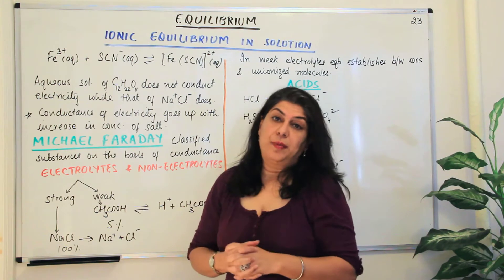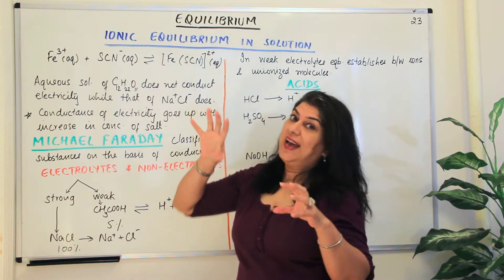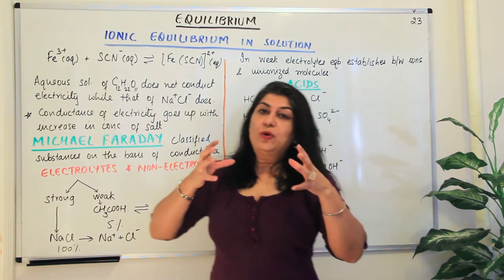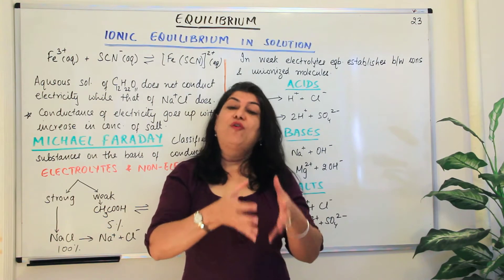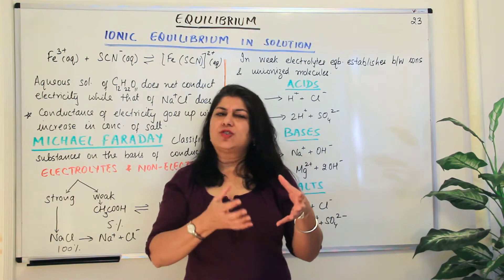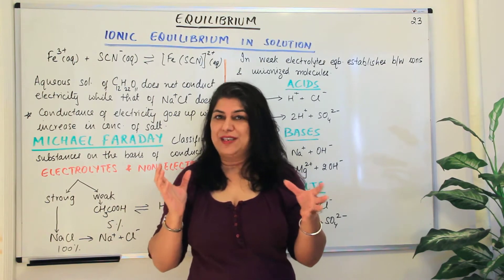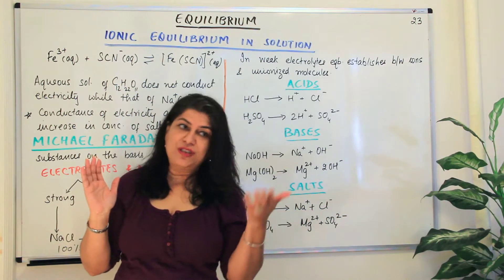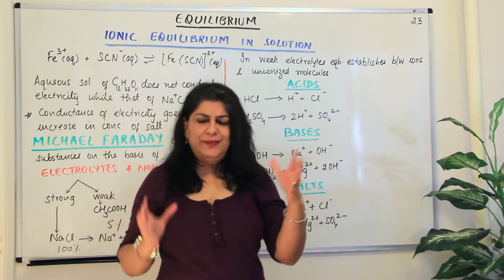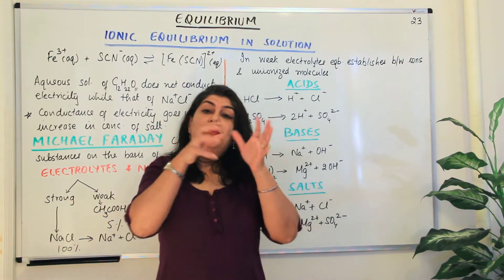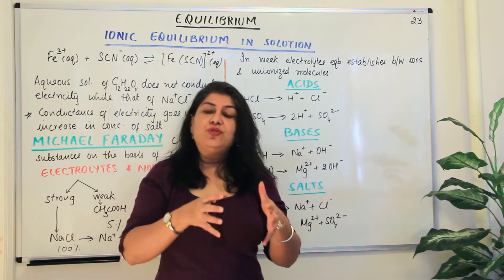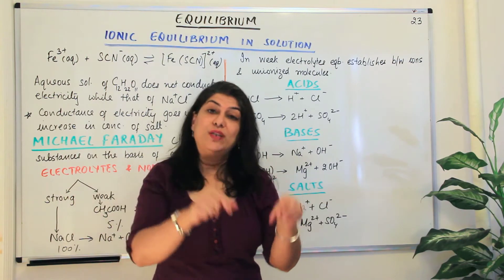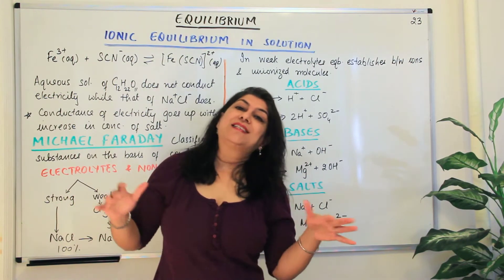When you have ionic compounds, they have, as I told you, positive and negatively charged ions. When you put an ionic compound in water, they form a solution. Water is a polar solvent — it has two poles, positive and negative. The positive is H⁺ and the negative is OH⁻. So when you put an ionic compound into water, most ionic compounds dissociate into their ions — they break down, and the positive and negative parts separate.